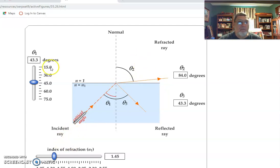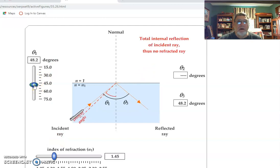And if you go above that, then all you have is the reflected ray - that's called total internal reflection. That's the reason you can see the reflection of the turtle on the surface.